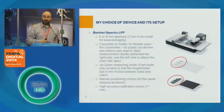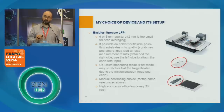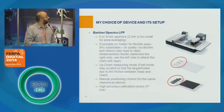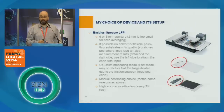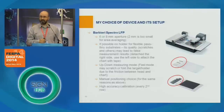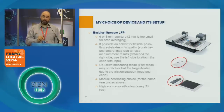My choice for measurement in transmissive mode is the Barbieri Spectral LFP. This is a very versatile device that allows measurement of both thick and thin substrates in reflective and transmissive mode. I use the bigger apertures — six or eight millimeters, usually six. For example, when measuring textured substrates like backlit PVC or backlit textile, the texture requires a wider area for averaging, so an eight millimeter aperture is recommended.